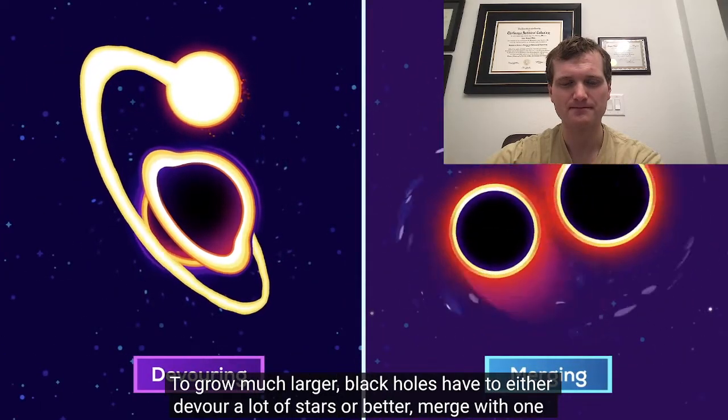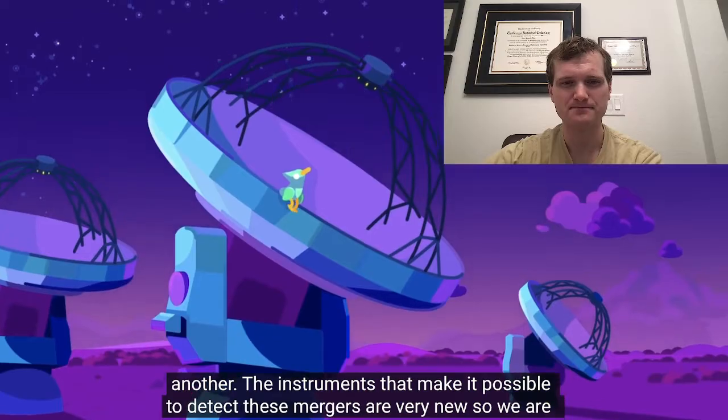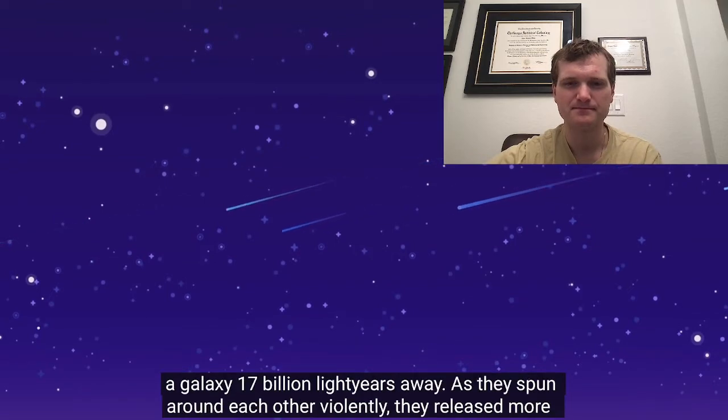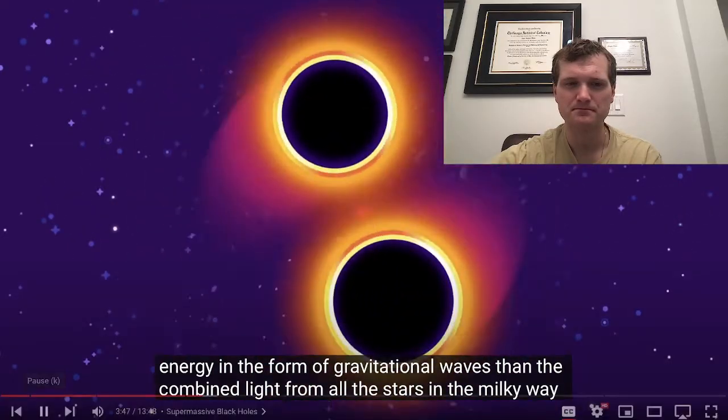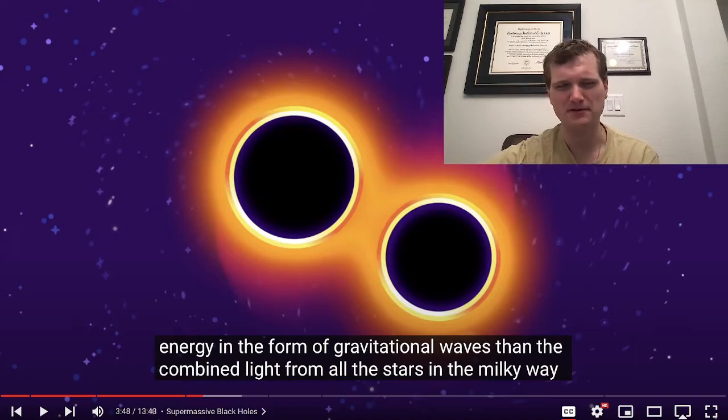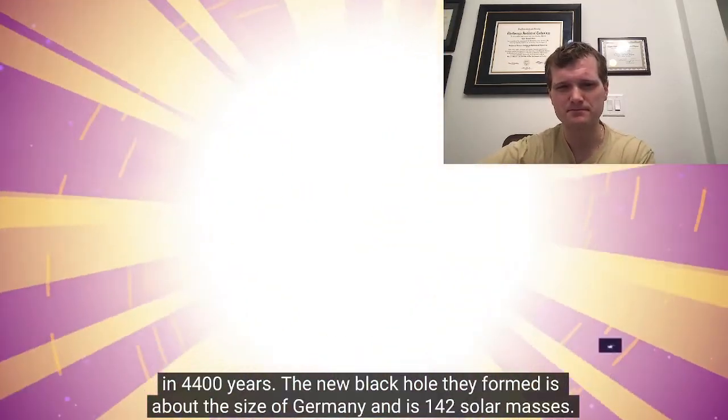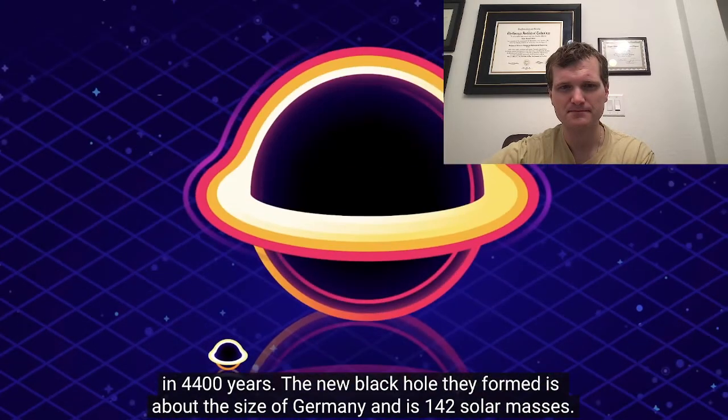To grow much larger, black holes have to either devour a lot of stars or, better, merge with one another. The instruments that make it possible to detect these mergers are very new, so we're currently discovering a lot of exciting things, like two massive black holes that we detected in a galaxy 17 billion light years away. As they spun around each other violently, they released more energy in the form of gravitational waves. That's cool, because the universe is only 14, 15 billion years old, so you're looking beyond the horizon of essentially how far we can see using light. That's fascinating to me.